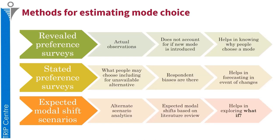The first method is revealed preference. In revealed preference, these are the actual observations of people who are using different modes of transport. These observations can help in estimating the existing demand and how this demand varies by the socio-economic group of the society. However, when we are trying to introduce a new mode, revealed preference surveys do not help. It is useful in knowing why people choose a certain mode and therefore identifying the control variables.